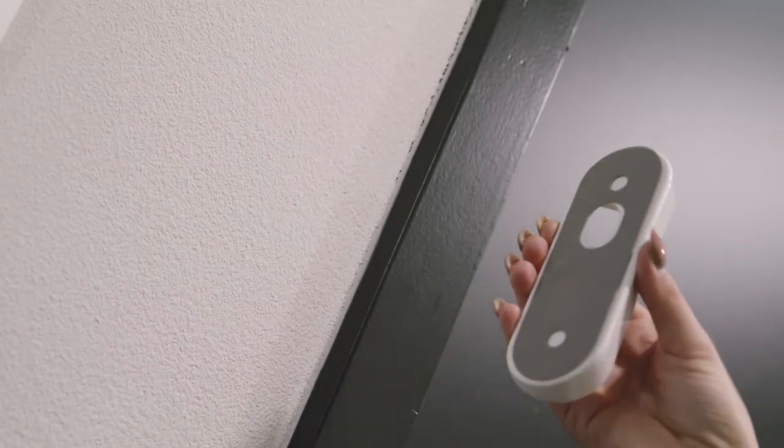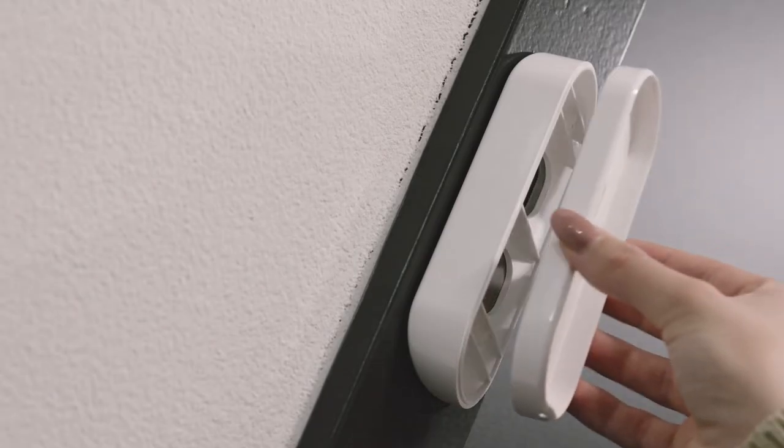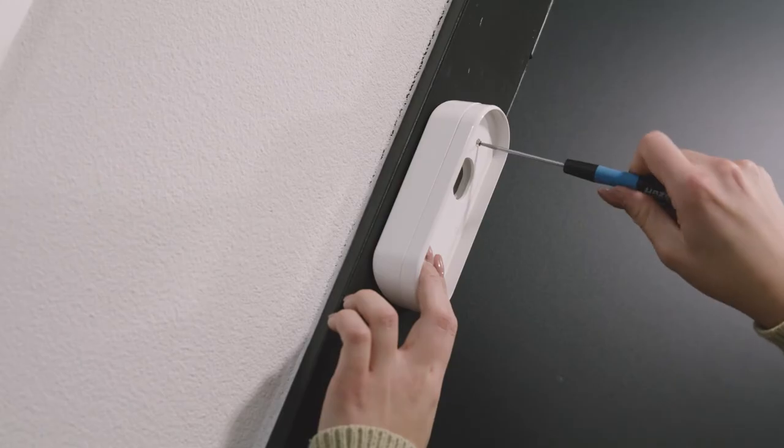You can also use the corner mount for an optimized viewing angle. Attach the bracket to the corner mount. Tighten the screws.